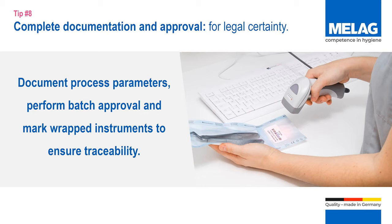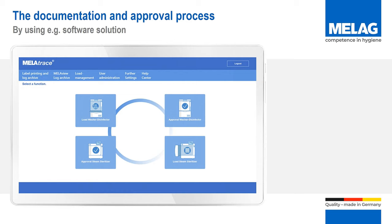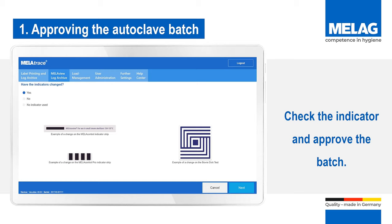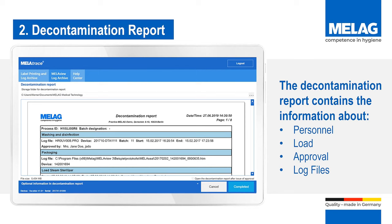I will now demonstrate all steps required for a complete documentation and approval of the sterilization batch. After completion of the sterilization, you can start approving the batch with a few clicks. Every sterilization batch should be checked using an indicator. If you sterilize hollow body instruments, you are supposed to use a helix test body. This test simulates the highest requirements of sterilization of hollow bodies. Please document the successful color change of the indicator. After documenting the batch indicator and providing the batch with approval, you get a tamper-proof PDF file. The decontamination report contains information about personnel who performed the reprocessing, the load which was decontaminated, approval decisions, and log files with all important parameters documented by the electronics of the autoclave.